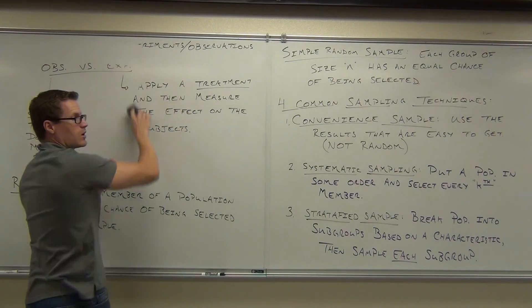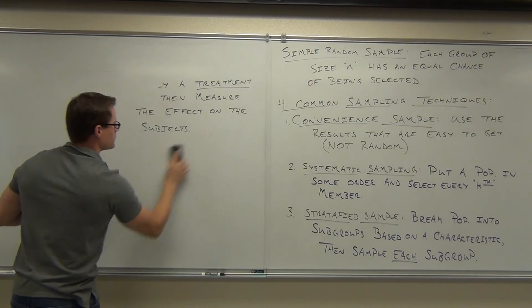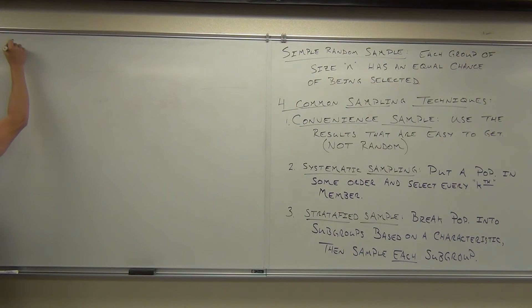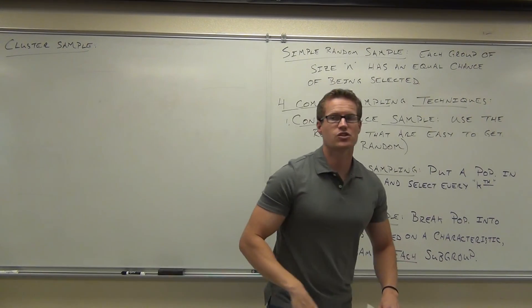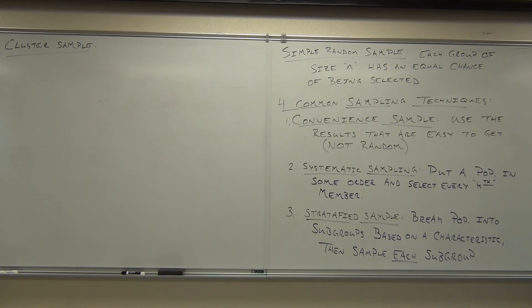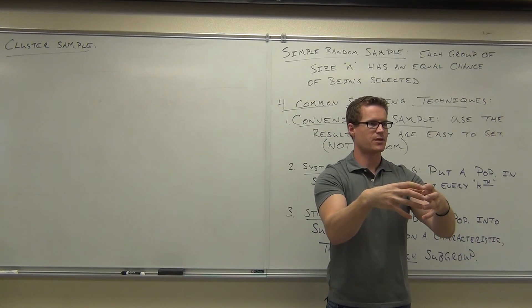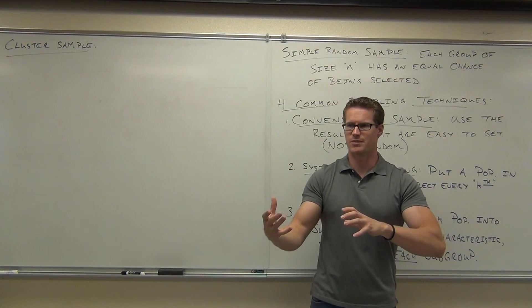Now the last one we're going to talk about is similar at first glance with the stratified. It's called a cluster sample. Here's how a cluster sample works. A cluster sample, you're still breaking up your population into groups. So what I would do in a cluster sample is this. According to your seating arrangement, I would say, okay, every block of four people is a cluster. So four, four, four, four, four, four. I would do that all across the room and break you all up into four group little clusters. Are you with me on this? Am I doing this by any characteristic? Am I grouping people the same hair color or grouping genders or grouping ethnicities? Am I doing that at all? In fact, I don't even care about that.